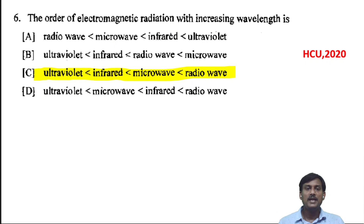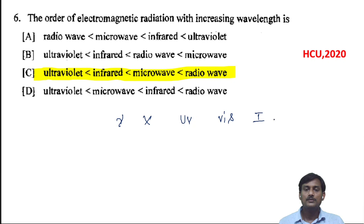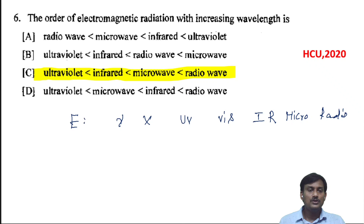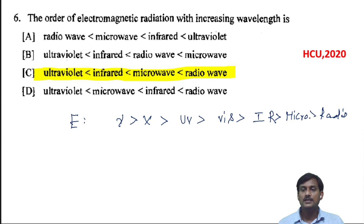The order of electromagnetic radiation with increasing wavelength: in electromagnetic radiation we have several regions — gamma, X-rays, UV, visible, infrared, microwave, and radio. The energy order is gamma > X-rays > UV > visible > IR > micro > radio. Since wavelength is inversely related to energy, the increasing wavelength order is UV < visible < IR < micro < radio.